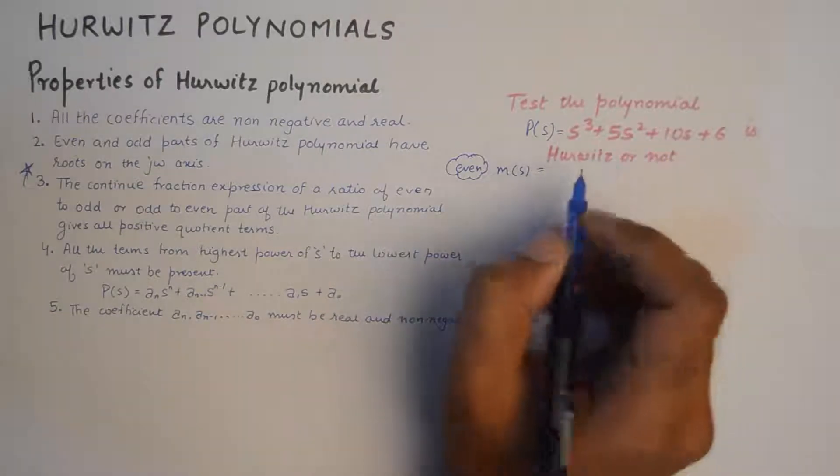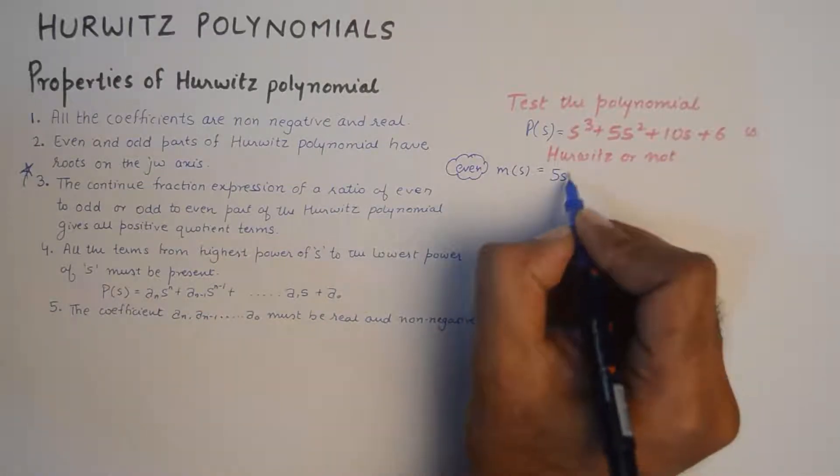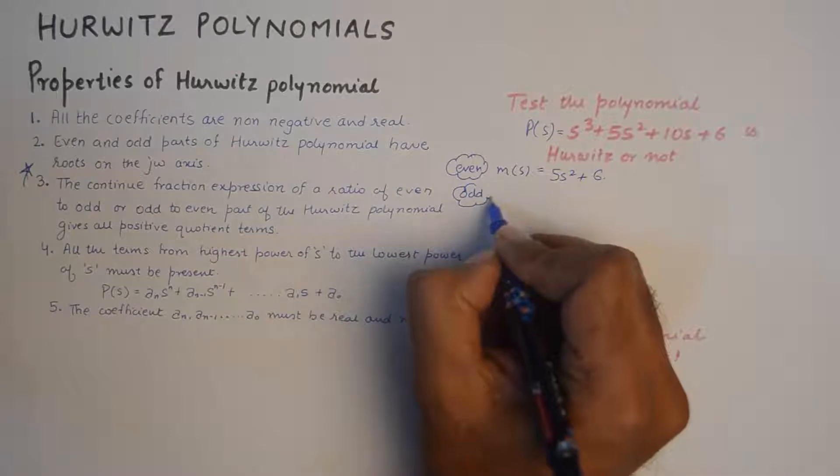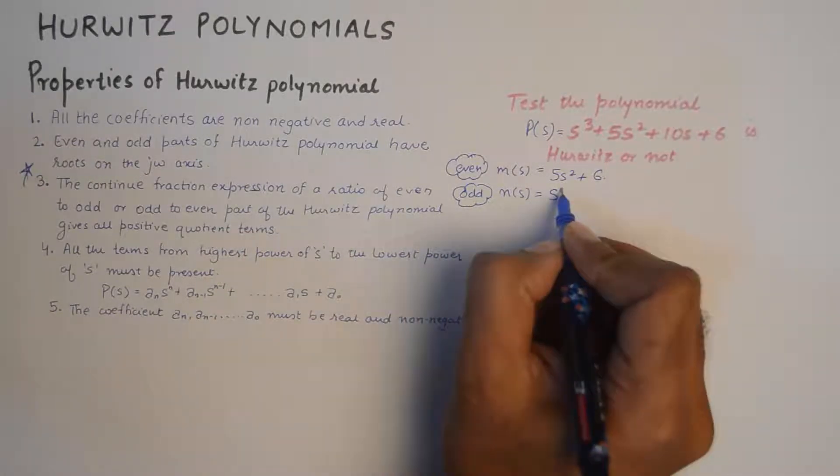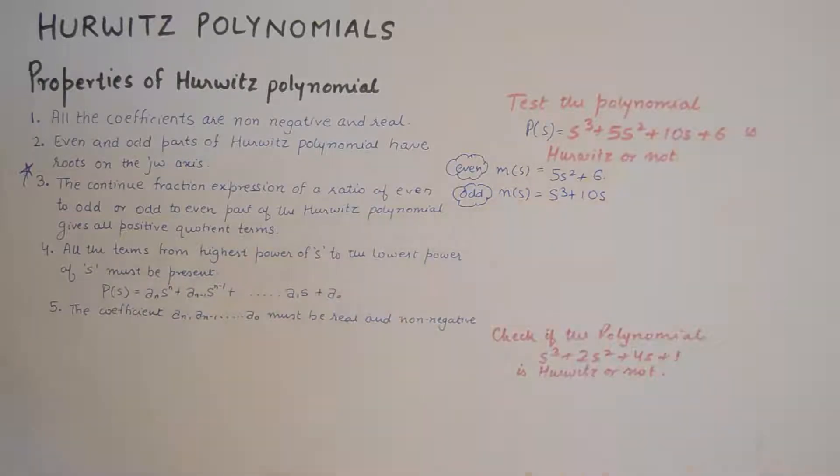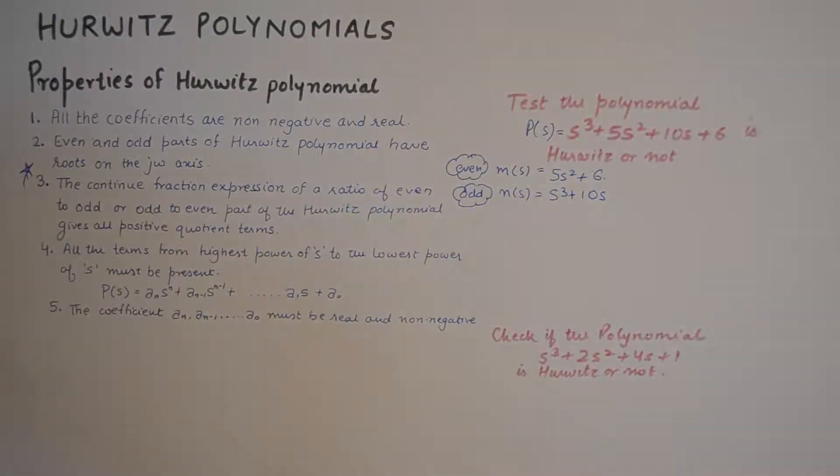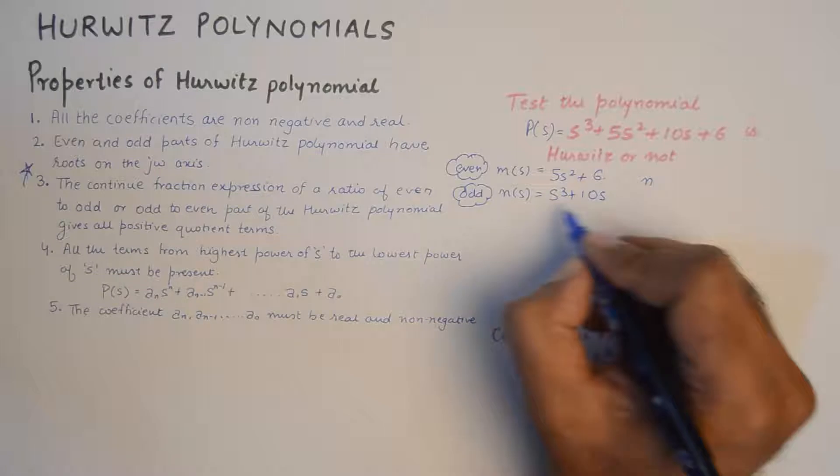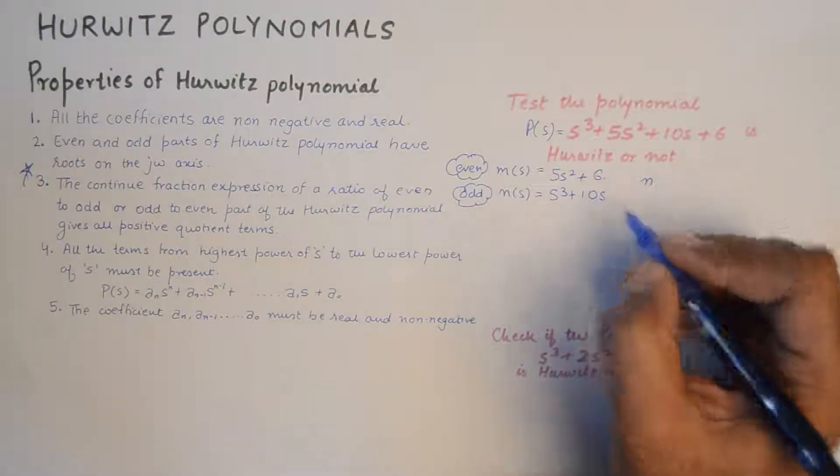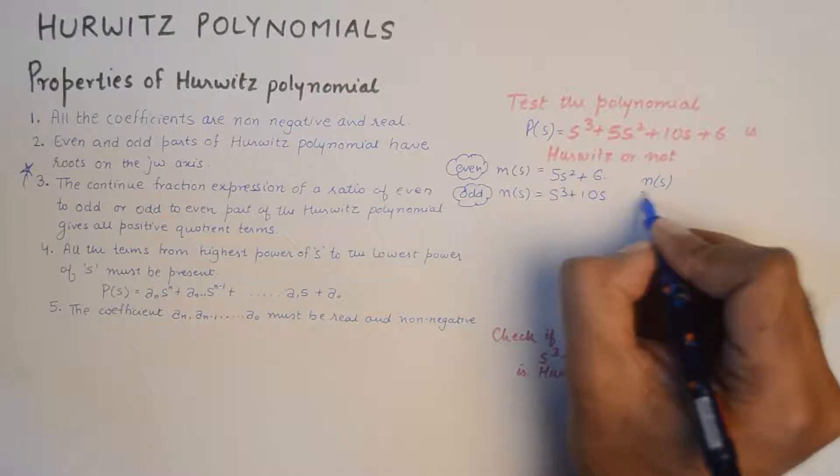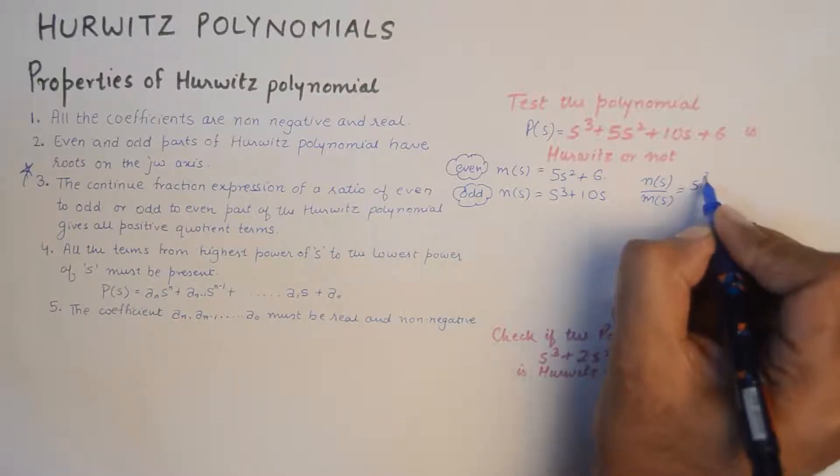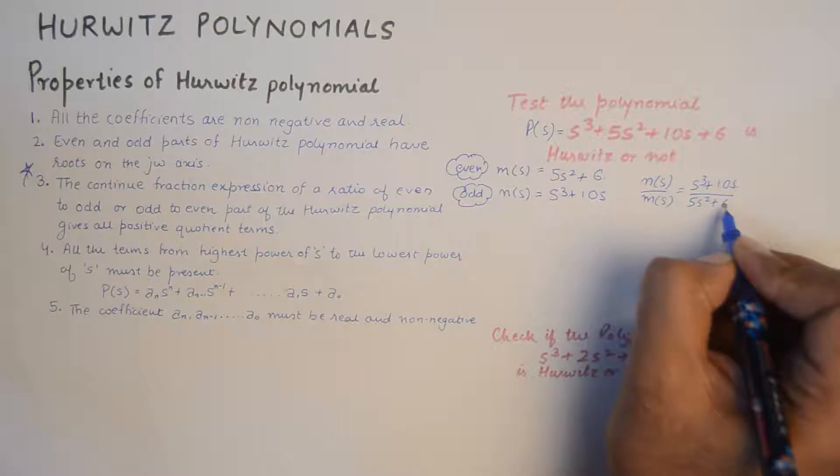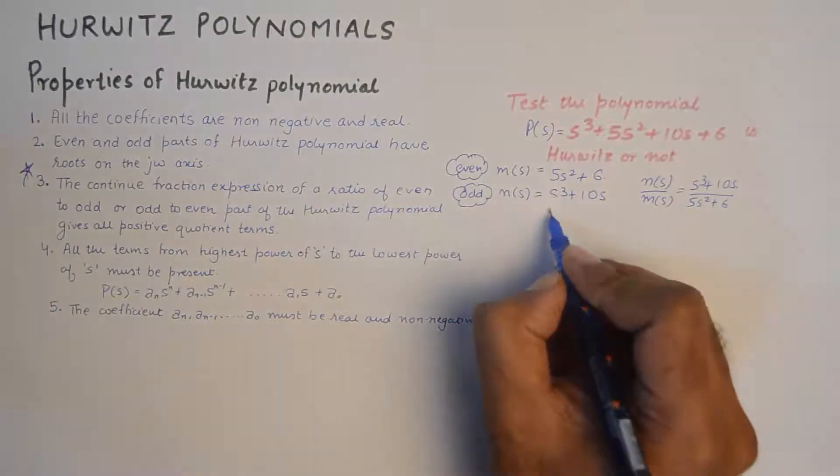I'll say the even part is M(s), and I'll take out the even terms from this, so this will become 5s squared plus 6. And the odd part is N(s), which is s cubed plus 10s. Then I'll take the ratio of odd to even in this case because odd has a higher power, so I'll take N(s) upon M(s), which becomes s cubed plus 10s upon 5s squared plus 6.